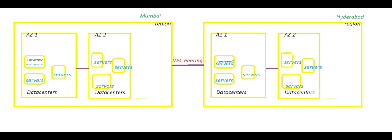By using VPC peering we are providing connectivity between servers, data centers, availability zones, or regions. I hope you understood this video. If you did, please like, share, subscribe, and hit the bell icon to get the latest updates. Thanks for watching, see you in the next video!